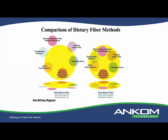In picture form, this chart provided by Barry McCleary gives an idea of what is captured by the different methods. The methods have similarities in the enzymes used for analysis, but there are time and temperature differences. The ultimate goal is to replicate human digestion. On the left-hand side, you see AOAC 985.29 and 991.43 — methods that take about three to four hours in process.